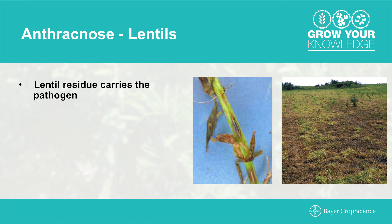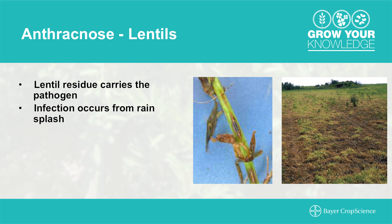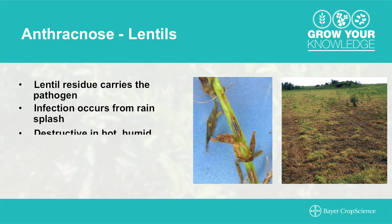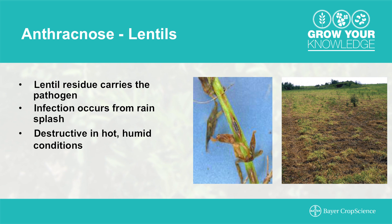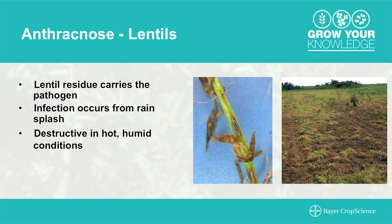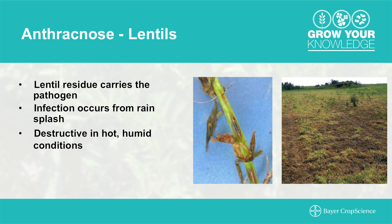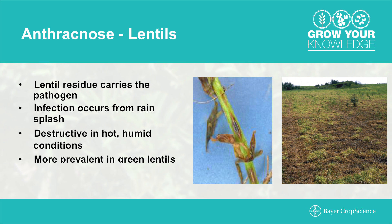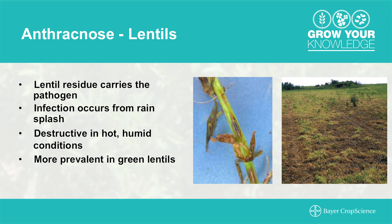Anthracnose is a very important disease in lentils. It is carried by crop residue for up to four years. Infections are rain-splashed onto leaves and stems. It can be extremely destructive under hot and humid conditions. As the canopy closes, lesions will appear on the stems, and as it spreads there will be yellow patches in the field with brown dead plants in the center. It's more prevalent in green lentils. Red lentils generally have stronger genetic resistance to this disease.